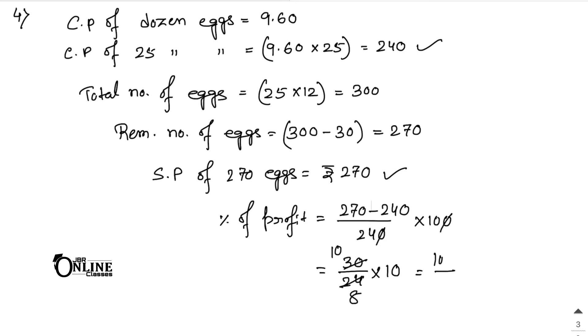After cancellation: 30 by 24 into 10, which simplifies to 100 by 8, and 100 by 8 equals 12.5%. That is your answer.